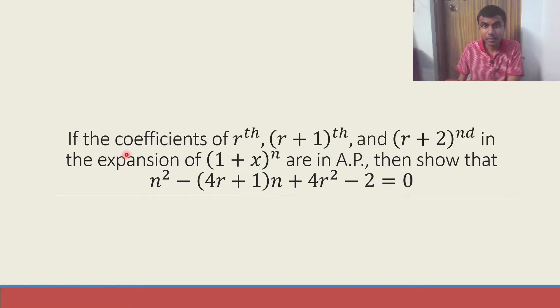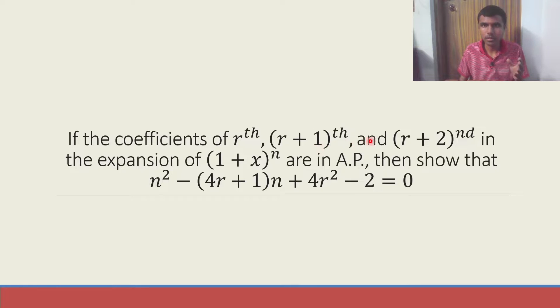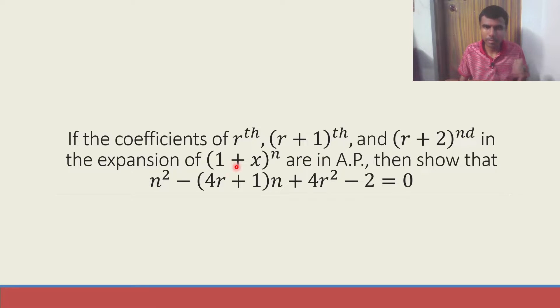Here we are given that if the coefficients of the rth, (r+1)th, and (r+2)nd terms in the expansion of (1+x)^n are in AP, then we have to show this result.